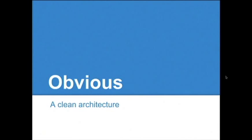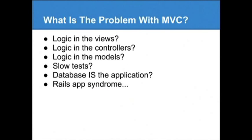Obvious is a clean architecture, as defined by Uncle Bob's posts on clean architecture, or at least it strives to be. And it tries to solve the essential problems with Model View Controller. Model View Controller is a good pattern, it's a useful pattern, it's a popular pattern, but it has some flaws that people seem to run into and haven't really come to grips with yet in a way that solves the problems.